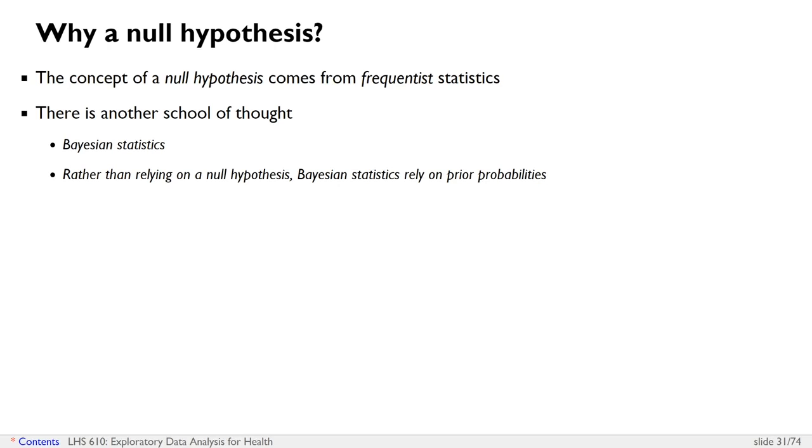Instead of setting a null hypothesis and then trying to calculate a probability that we would have our observed data or something more extreme given that null hypothesis, Bayesian statistics rely on trying to constantly refine an estimate of a relationship between two variables. Bayesian statistics start with prior probabilities, which is your best guess of what the situation is based on what we know so far. And then using new information from a dataset that you collect or a study that you perform, the idea is to calculate a posterior probability which takes into account the new information.